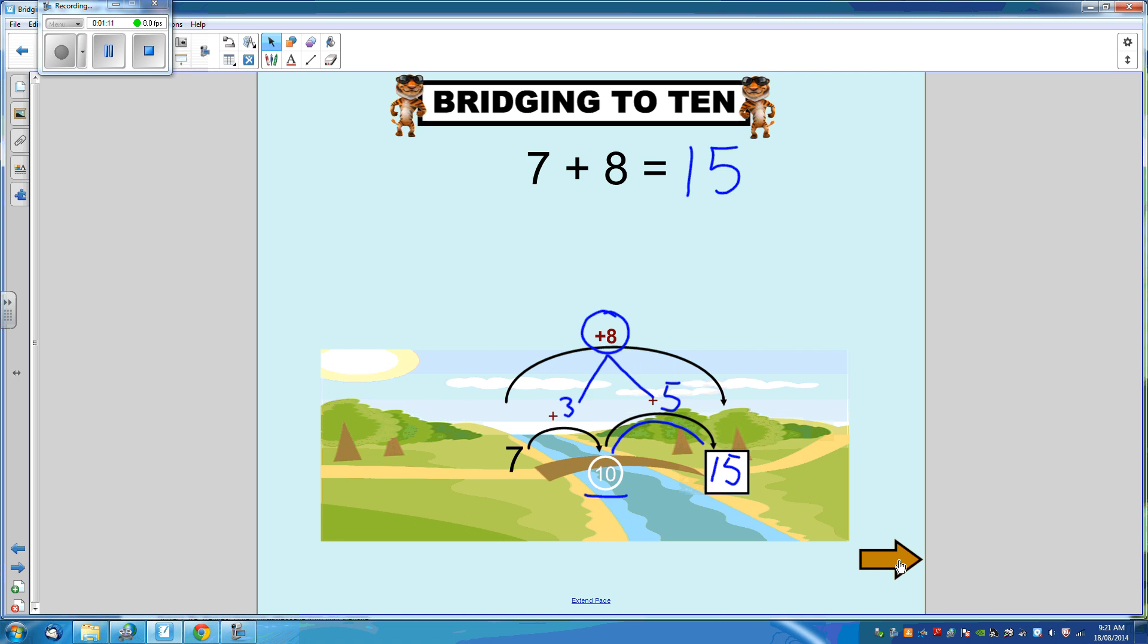Let's look at another example using some larger numbers. 16 plus 7. So at one end of the bridge we have our 16. We need to use our knowledge of friends of 10 to get to the next decade. The next decade that is closest to 16 is 20. So 16 plus 4 equals 20.